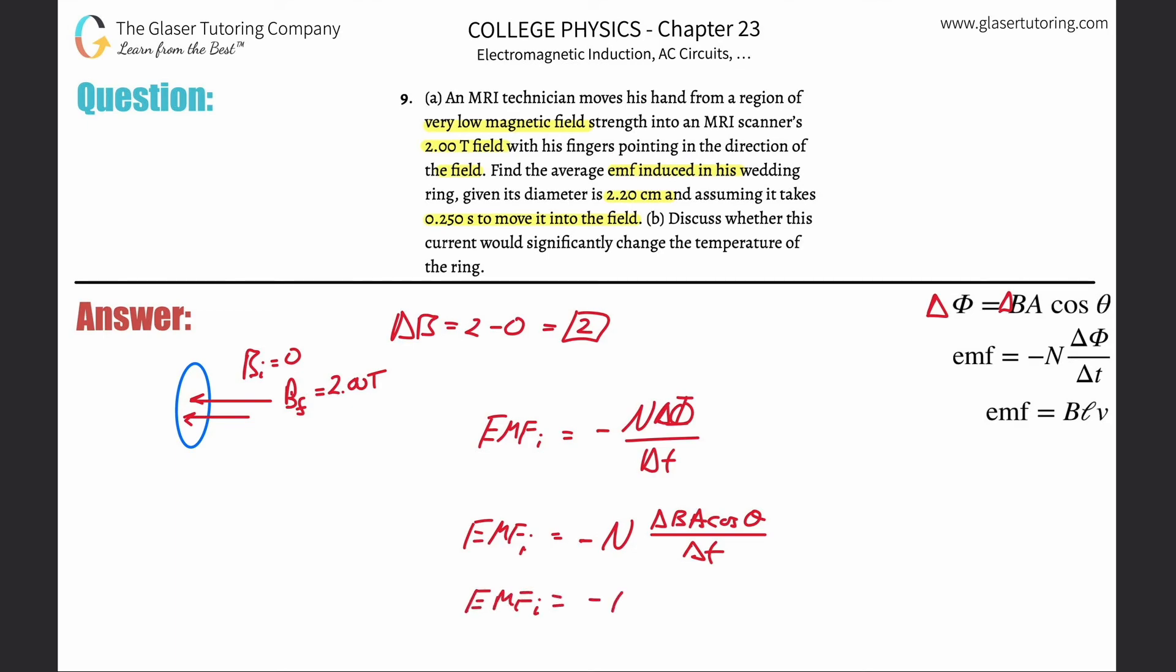So it's one. The change in magnetic field here is going to be 2, multiplied by the area. So they told us the diameter, but you know that this thing is a circle. So what's the area of a circle? It's πr². So we're going to take π, multiply it by half of this diameter, so it'd be 2.20...